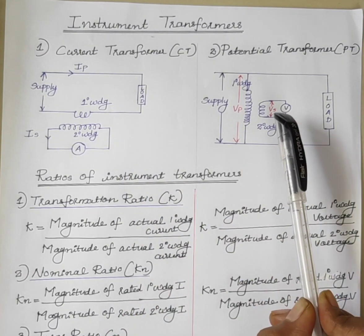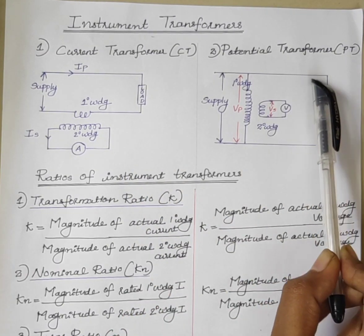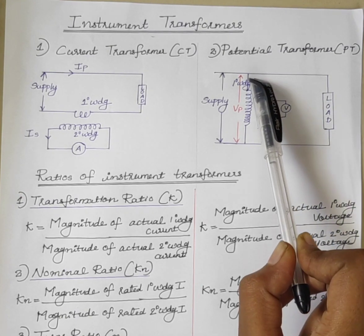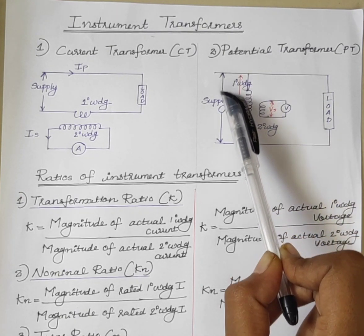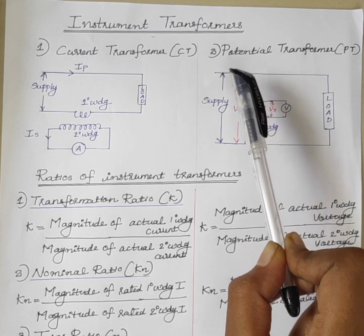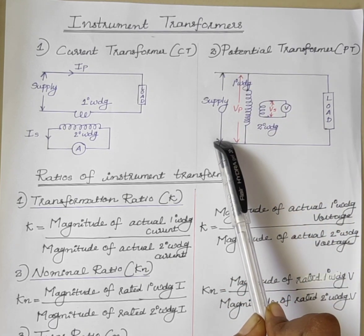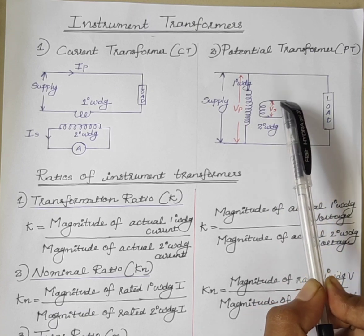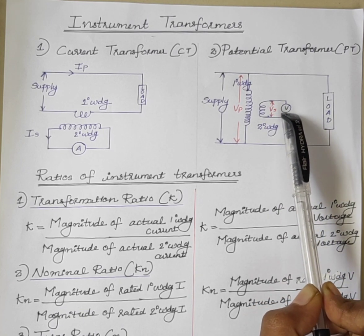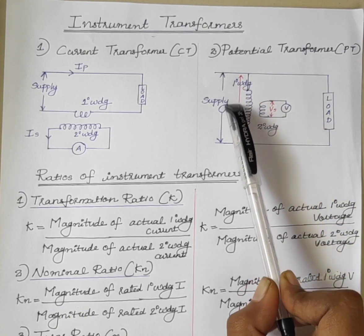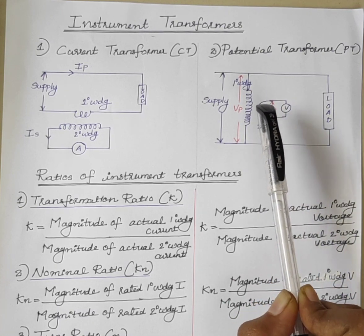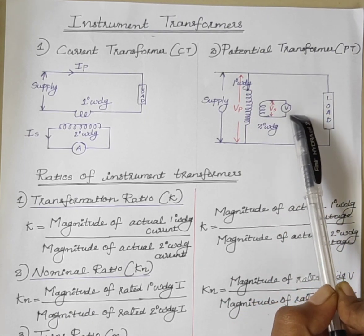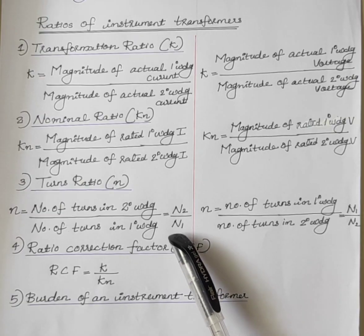Figure 2 shows voltage measurement with a potential transformer. Here, the primary winding is connected to the voltage being measured and the secondary winding is connected to a voltmeter. The potential transformer steps down the voltage to the level of the voltmeter.